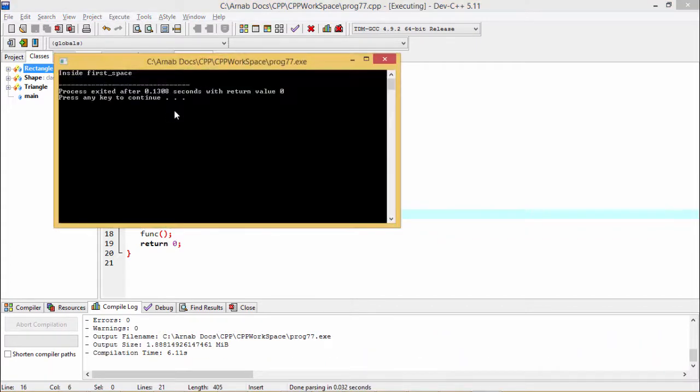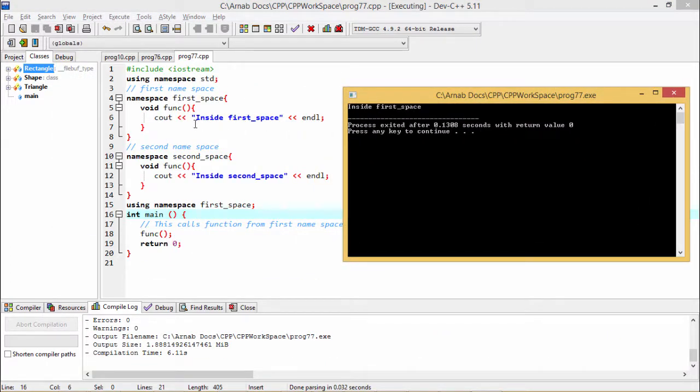This first space, the respective function that is the FUNC, this function will be called this one and as a result of that, inside first space, that message will get printed on the screen.